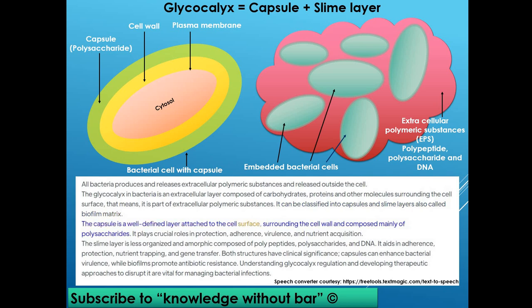The capsule is a well-defined layer attached to the cell surface, surrounding the cell wall, and composed mainly of polysaccharides. It plays crucial roles in protection, adherence, virulence, and nutrient acquisition. The slime layer is less organized and amorphous, composed of polypeptides, polysaccharides, and DNA.